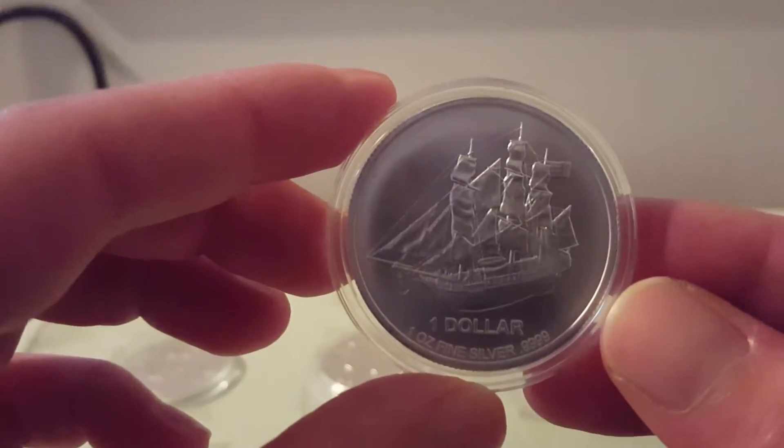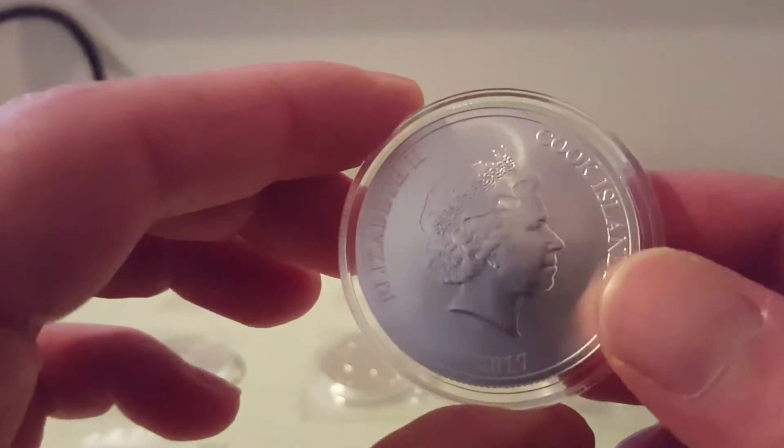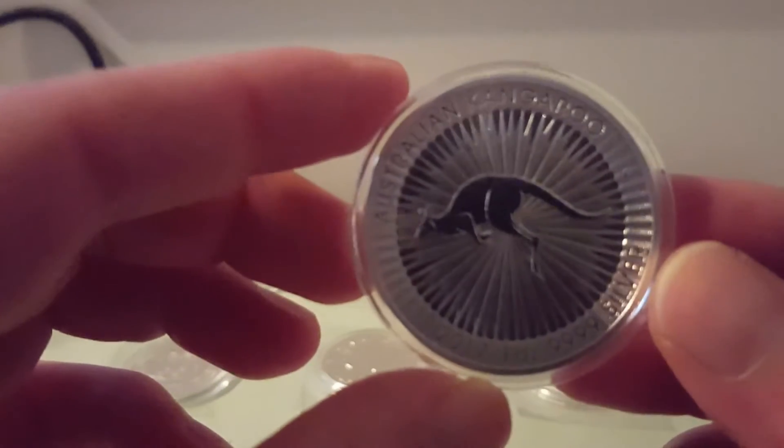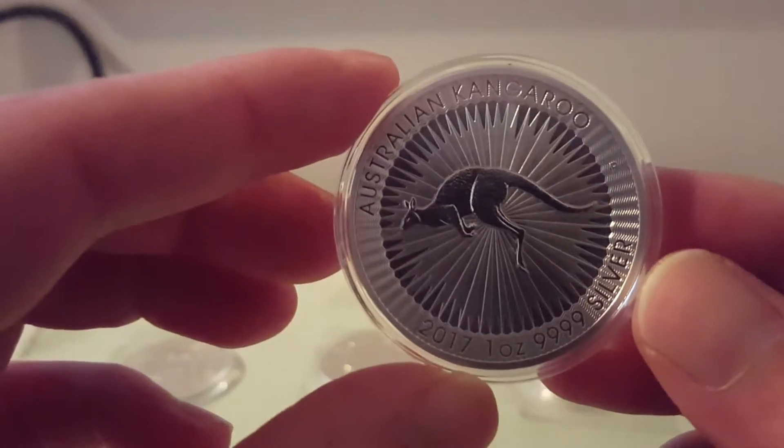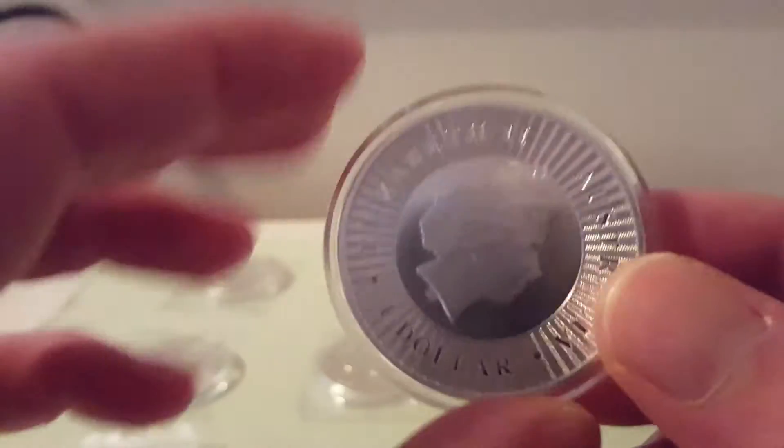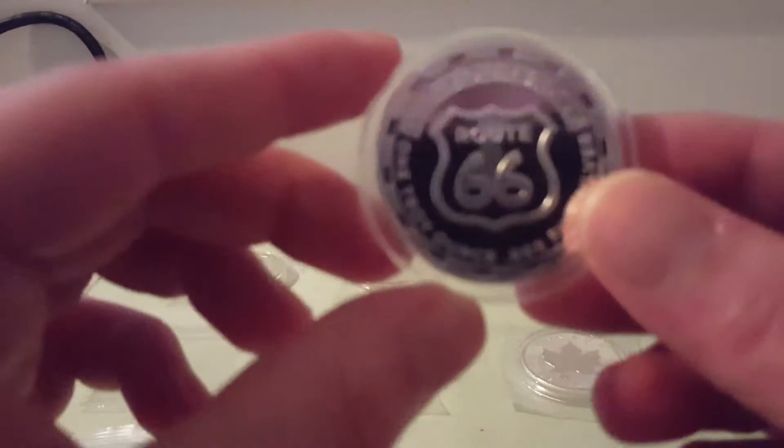It's the Cook Island with the one dollar face value. Here also the Queen. Here the 2017 Kangaroo, so the Australian Kangaroo. People say Kangaroo but the real word is Kangaroo, also with the Queen. Almost every stacker already got this coin.